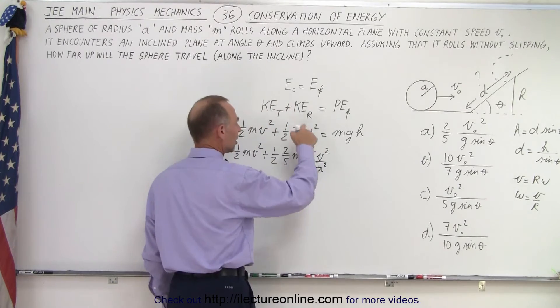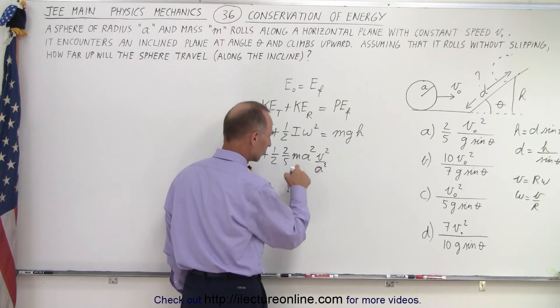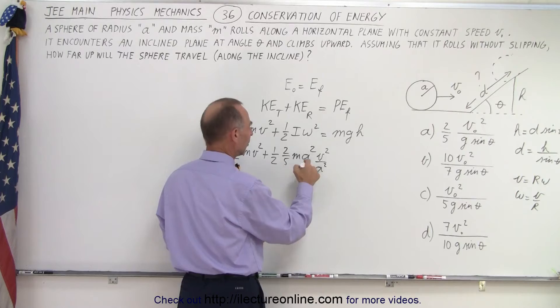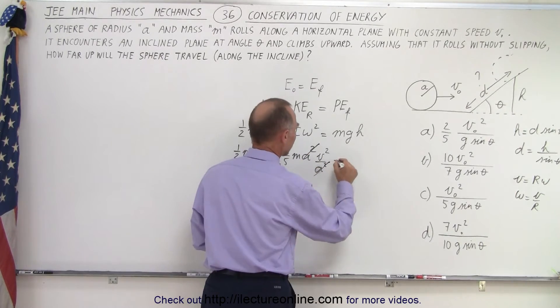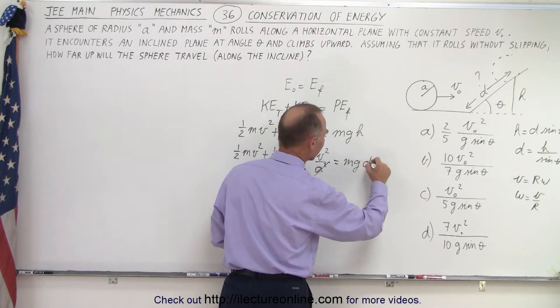And so now we've changed the units into linear units. The a's cancel out, so we get rid of that. And that equals mg times h, but h can be written as d sine theta. Then we realize we have an m in every term, so that cancels out.